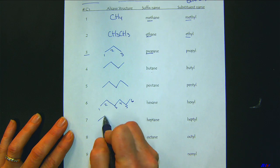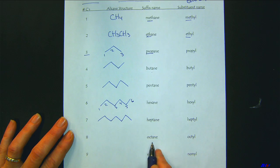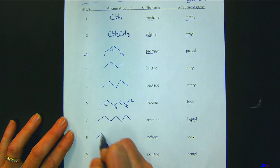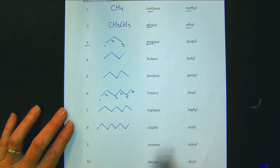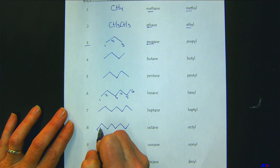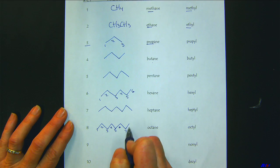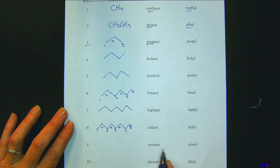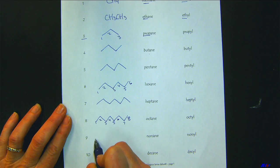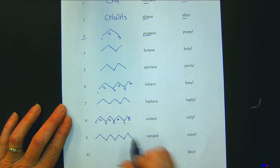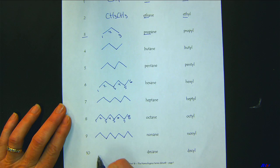Heptane would be seven. Octane is eight — let me count: three, four, five, six, seven, eight. Perfect. Nonane is nine, and decane is ten.